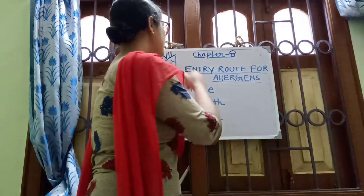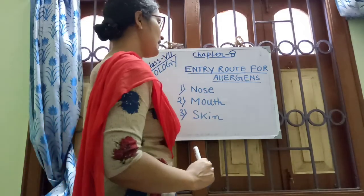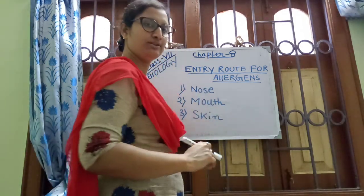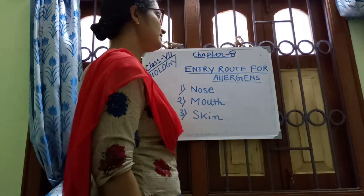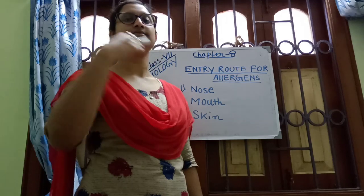Good afternoon students, welcome to class 7 biology. In the last video I discussed the concept of allergen. Today I'm going to discuss the entry routes for allergens. Allergens are substances that cause allergy. There are three main entry routes: nose, mouth, and skin. Through the nose, allergens enter our body and cause symptoms like breathing problems and hay fever.